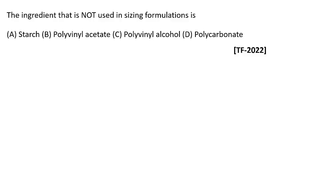These are straightforward questions on basic textiles. If you know the basics, you can easily answer them — no special mathematics or special concepts are required. The question asks: which ingredient is not used in the sizing formulation? The options are starch, polyvinyl acetate, polyvinyl alcohol, and polycarbonate.